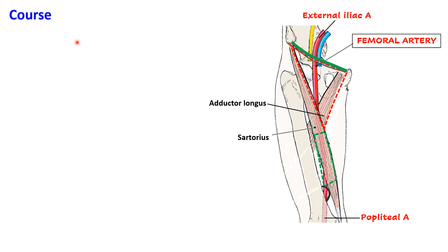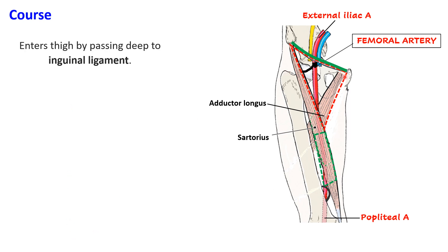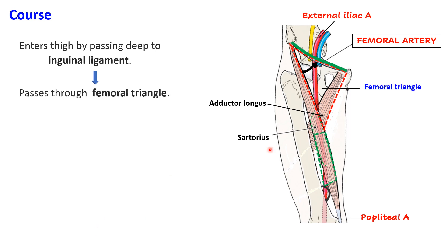Let us briefly look at its course. The femoral artery enters the thigh by passing deep to the inguinal ligament at the mid-inguinal point. After this, the artery courses through the femoral triangle.